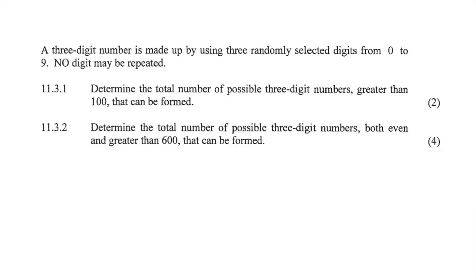Let's learn how to count. We have a three-digit number made up using three randomly selected digits from zero to nine — no digit may be repeated. Problem 11.3.2 asks us to determine the total number of possible three-digit numbers greater than 100. We have three spaces to fill. The restriction 'greater than 100' tells us that zero cannot occupy the first position; if one through nine occupies the first position, the number will be greater than 100.